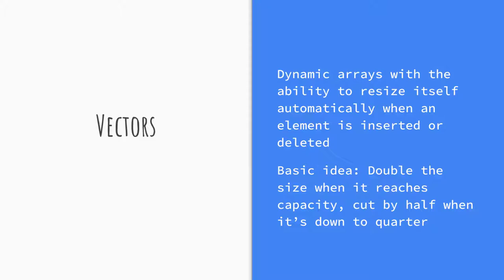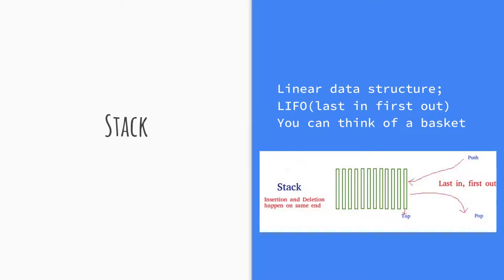The next data structure we'll look at is stacks. As we said, stacks are like baskets — when we do a push operation the element goes to the top, and when we do a pop operation it also happens from the top. Think of a big box: whenever we put an element it goes in from the top, and whenever we remove an element we remove it from the top.